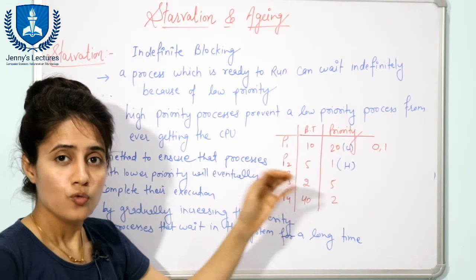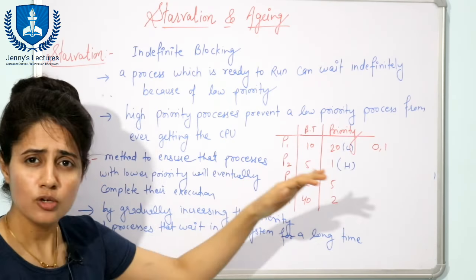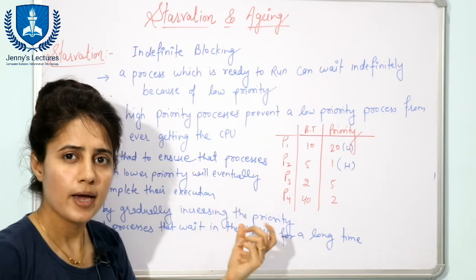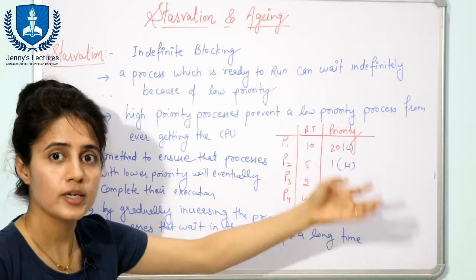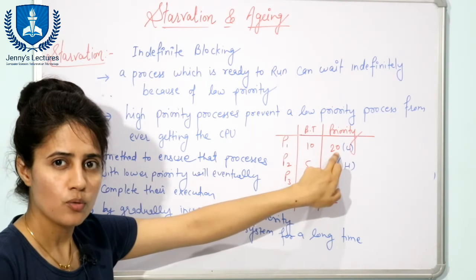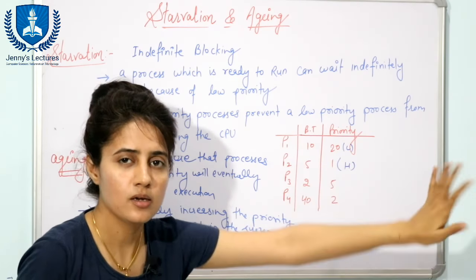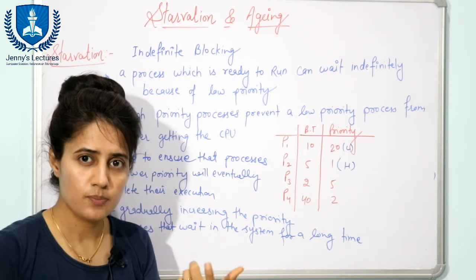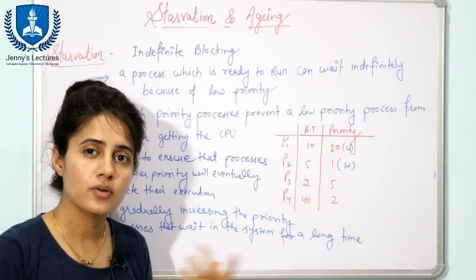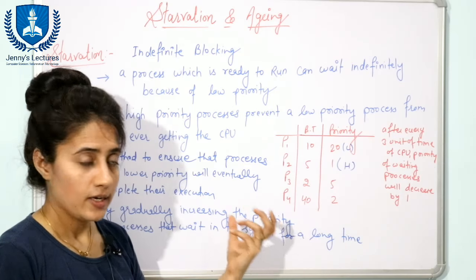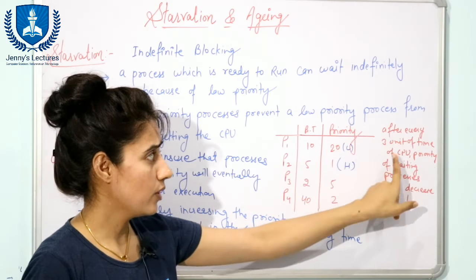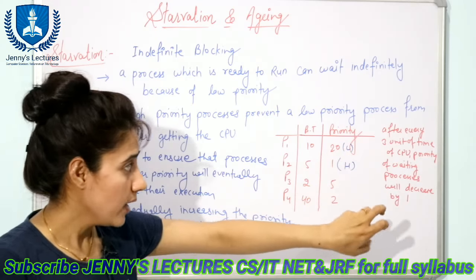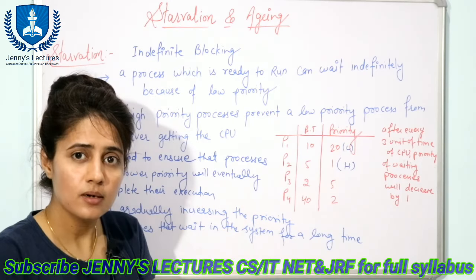In aging, we gradually increase the priority of processes which are in the waiting state for a long amount of time. Increasing the priority means — since we are taking lesser the number as higher the priority — we decrease the priority number from 20 to 19, then 18, then 17, and so on till zero. For example, after every three units of time in the CPU, the priority of the waiting process will be increased by one, which means the priority number decreases by one.